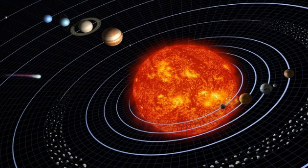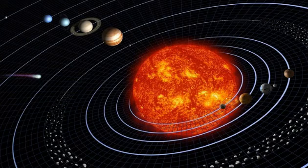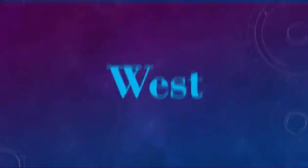Each planet of solar system has a fixed orbit on which they revolve around the Sun. The earth revolves on this path from west to east.